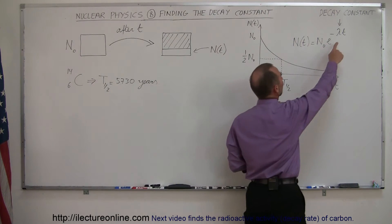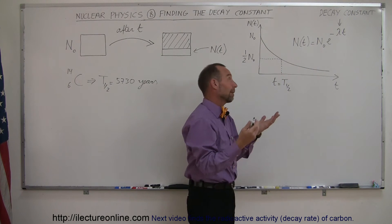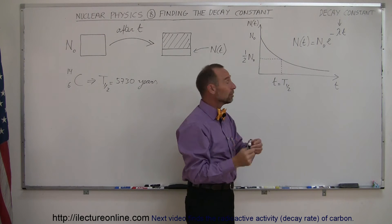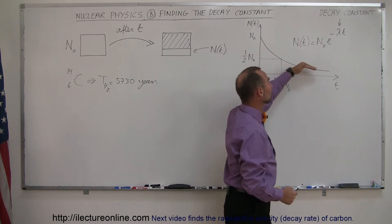This is represented typically in most textbooks as lambda. I don't know why they chose lambda, but that's what it is. And if lambda is a very big number, it decays quickly. If lambda is a very small number, it decays very slowly.